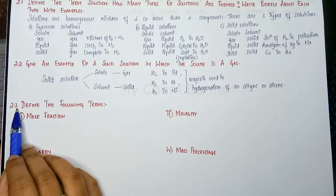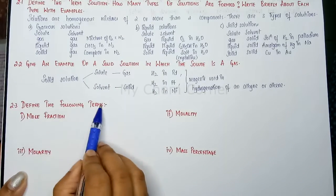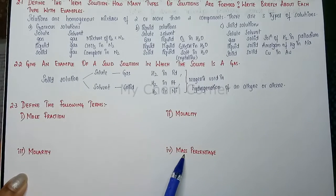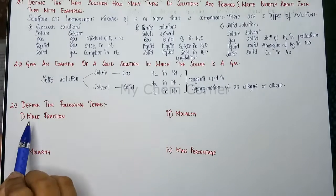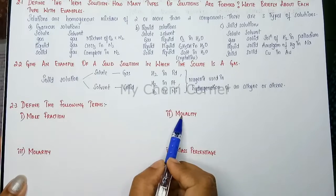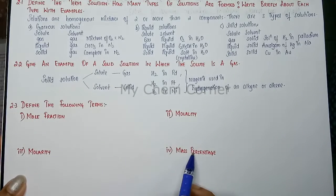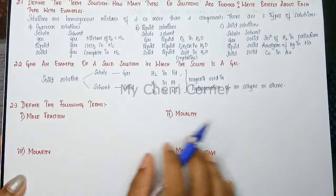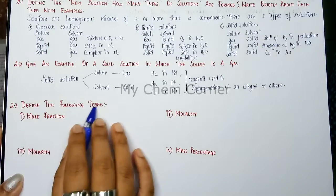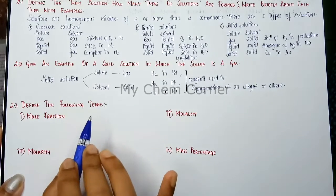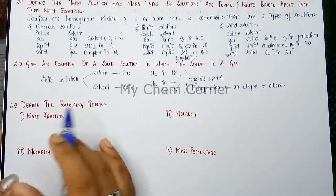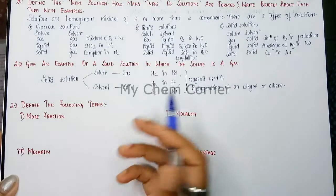Next is question number 2.3: define the following terms. Four terms are given — mole fraction, molality, molarity, and mass percentage. It's a very simple question; all you have to do is define the terms. When we look at mole fraction, we basically break it down to number of moles.